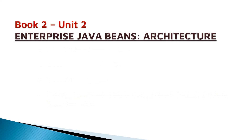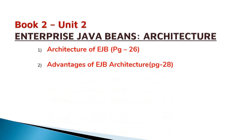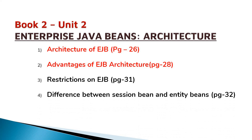Next, Book 2 Unit 2, that is EJB Architecture. EJB architecture is one of the frequently asked questions — please go through page number 26 and learn it well. Next, you should know the advantages of EJB architecture, given on page number 28. Similarly, you should know the restrictions on EJB, given on page number 31. You should also know the difference between a session bean and entity beans.